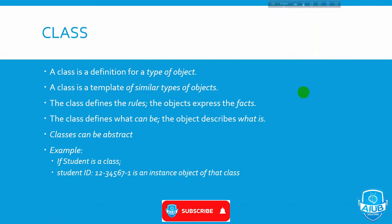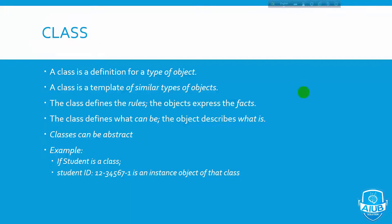First of all, what is a class? A class is a definition for a type of object. A class is a template of similar types of objects. The class defines the rules; the object expresses the facts. The class defines what can be; the object describes what is.